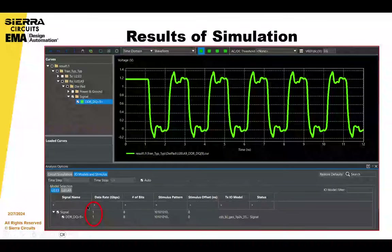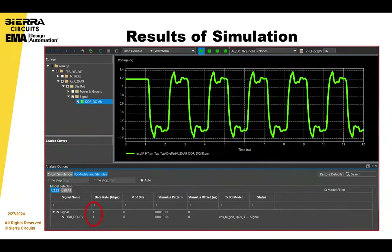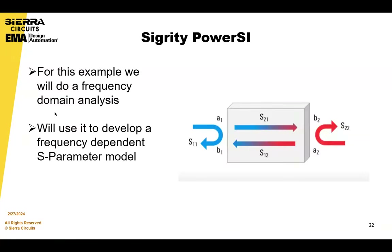The data rate, as you can see, is only one gigabit. So let's say we're interested in knowing whether that particular channel can support higher rates of data. For this, we're going to use a tool from Cadence called Sigrity Power SI. We'll do a frequency domain analysis and use it to develop an S-parameter model, and that model will tell us a lot about what's happening in the circuit.